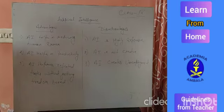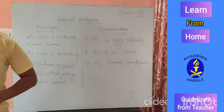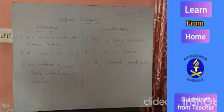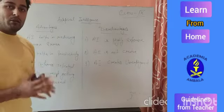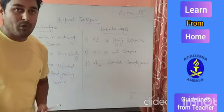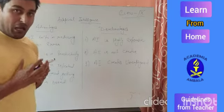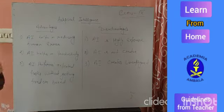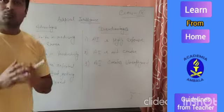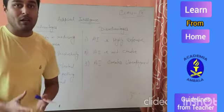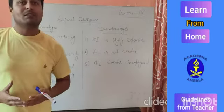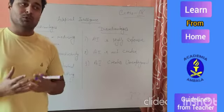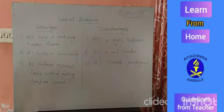Point number two: it helps in productivity. AI machines can increase productivity. A machine running a particular program is more effective than humans because it is pre-programmed, and that is why production is very high compared to humans.